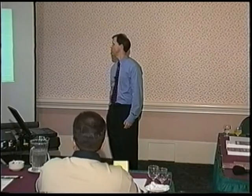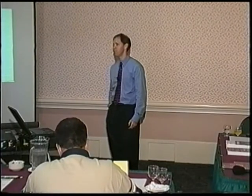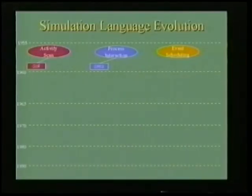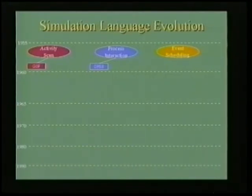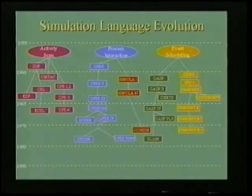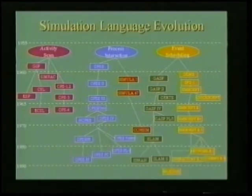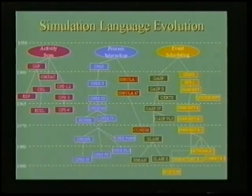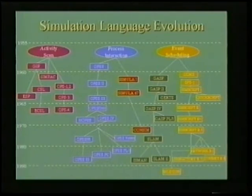Looking at simulation language evolution: GSP came out in 1960, and around the same time the process interaction group produced GPSS. GPSS is a very popular teaching language because it's easy to learn — many who took a discrete event simulation course in college used it. In the next five years we went from two such languages to fifteen, then added another nine, then a couple more. By the 1980s growth slowed. On the language family tree, GPSS has its own lineage evolving from the 1950s all the way to today, still available as both a language and simulation tool.